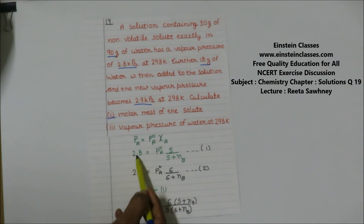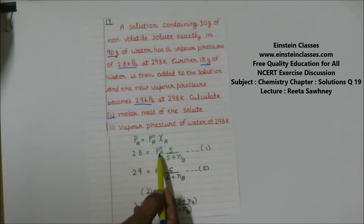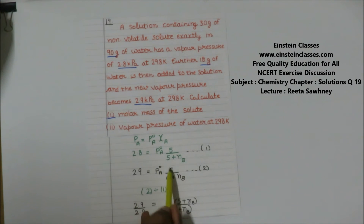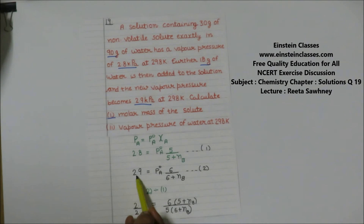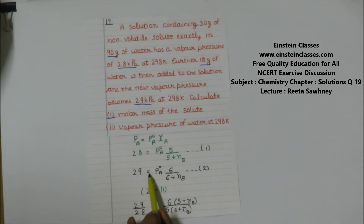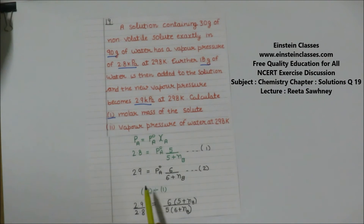Since the solute is non-volatile, the total pressure of the solution equals the partial pressure of the solvent. So: 2.8 = P⁰A × (5 / (5 + NB)), where NB is the moles of solute. When 18 grams of water is added and moles of solvent become 6, the vapor pressure is 2.9, giving us: 2.9 = P⁰A × (6 / (6 + NB)).